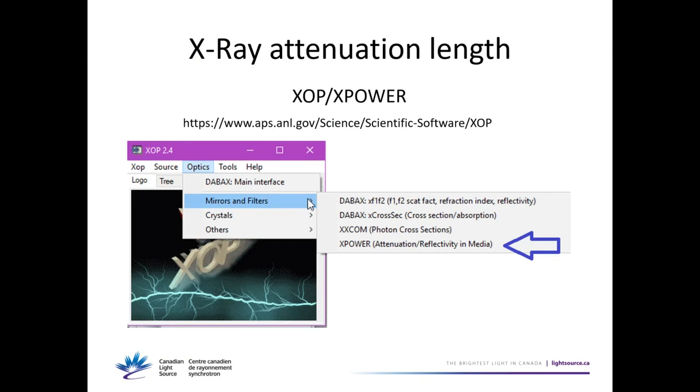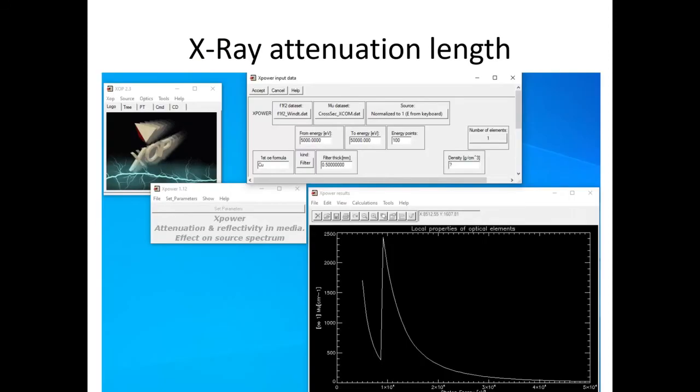The second option: if you download the XOP X-Power program, you can use this gadget. Enter your material, enter the density if you know it or a question mark to use the database value, enter the thickness, and it will give you the absorption and attenuation, as well as the numerical data you want.